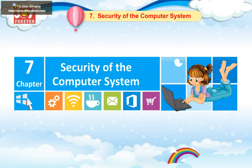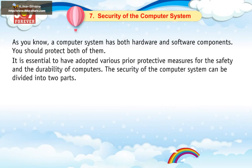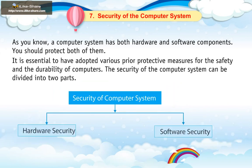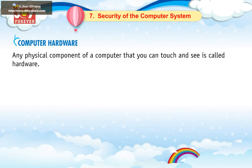Chapter 7: Security of the Computer System. As you know, a computer system has both hardware and software components. You should protect both of them. It is essential to have adopted various prior protective measures for the safety and durability of computers. The security of the computer system can be divided into two parts: Hardware Security and Software Security.